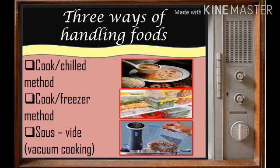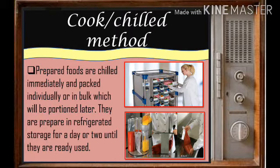The food service system has different ways of handling foods. First is the cook-chill method, second is the cook-freeze method, and last is sous vide or vacuum cooking. The cook-chill method means prepared foods are chilled immediately and packed individually or in bulk — a process where you cook the food first and then place it in the refrigerator to preserve its nutrients and vitamins.